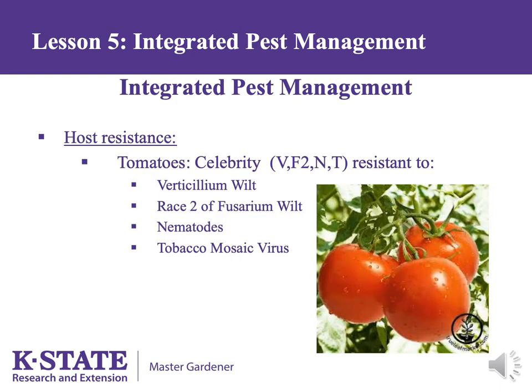A very effective method of pest control is host resistance. Tomatoes are an excellent example. Celebrity tomato is resistant to verticillium wilt, race 2 of fusarium wilt, nematodes, and tobacco mosaic virus. Resistance does not mean these plants are immune to these troubles, but rather that none of these problems will cause significant damage to tomatoes.